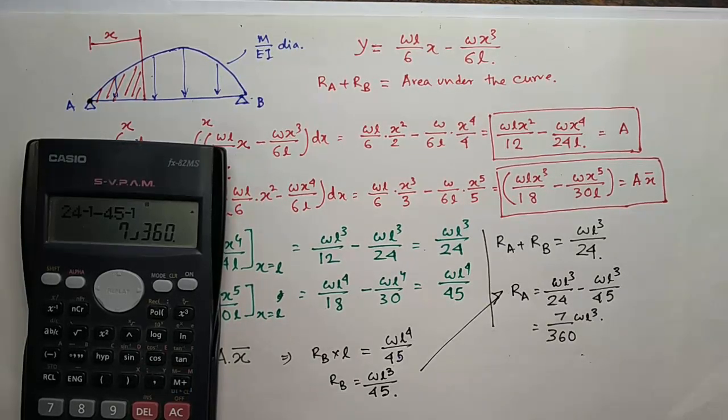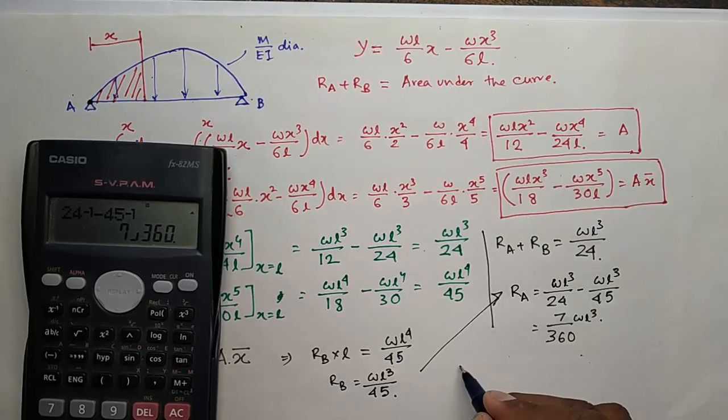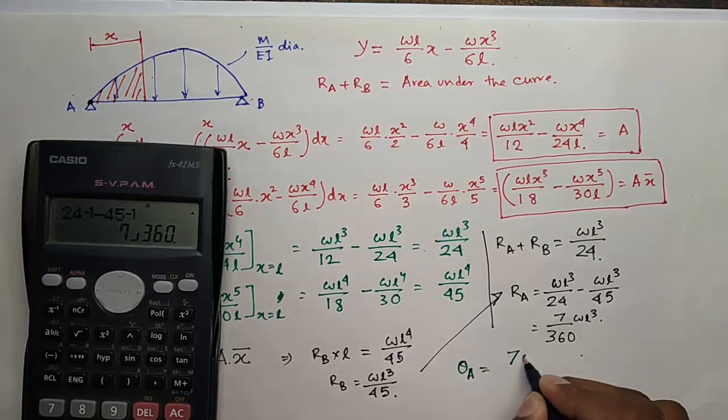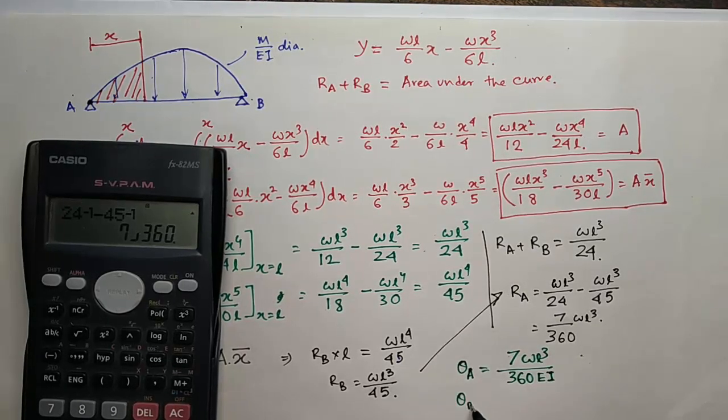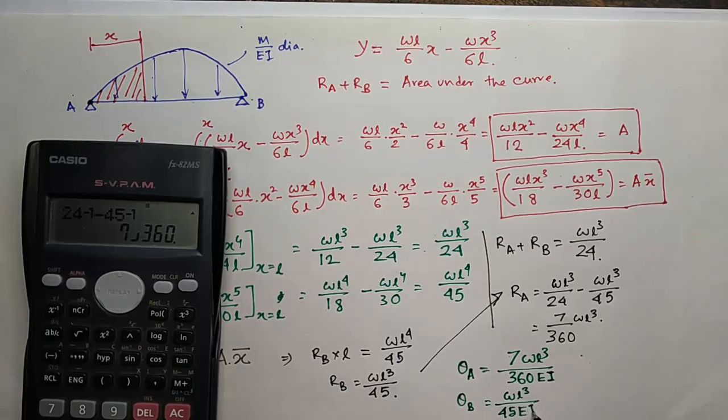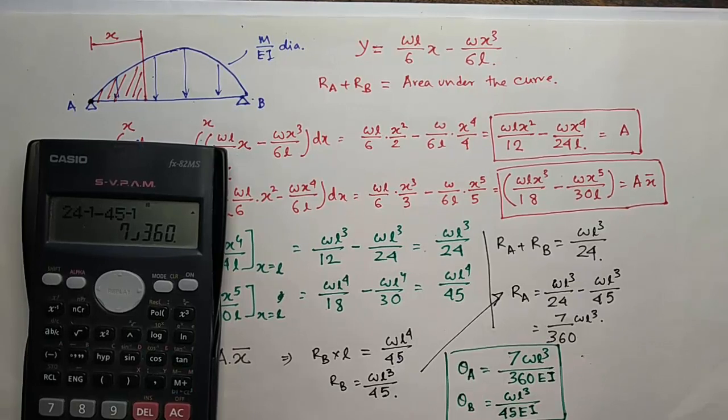These are the reactions of the conjugate beam, which are the slopes of the actual beam. So in our case, the slope at A, that is theta A, will be 7WL cubed by 360EI. Theta B will be WL cubed by 45EI. Now it's time to determine the deflection of the beam.